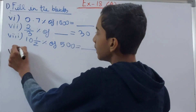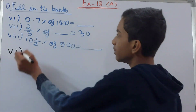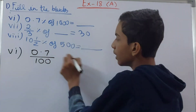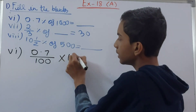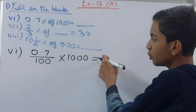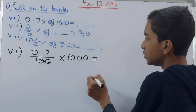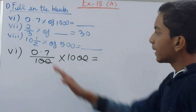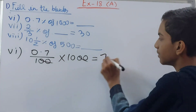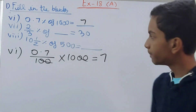Sixth part: 0.7% of 1000. Multiply: 0.7/100 × 1000. Cancel two zeros from 100 and 1000, leaving 0.7 × 10. Moving the decimal one place to the right gives 7. So 0.7% of 1000 equals 7.